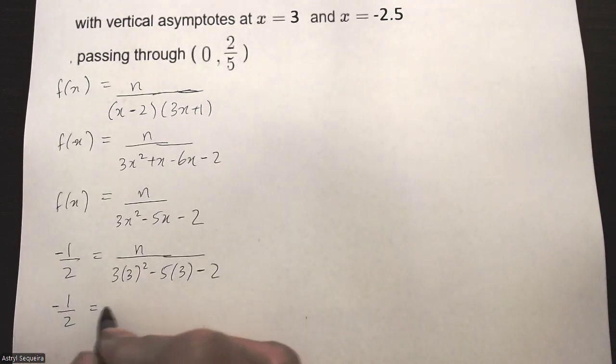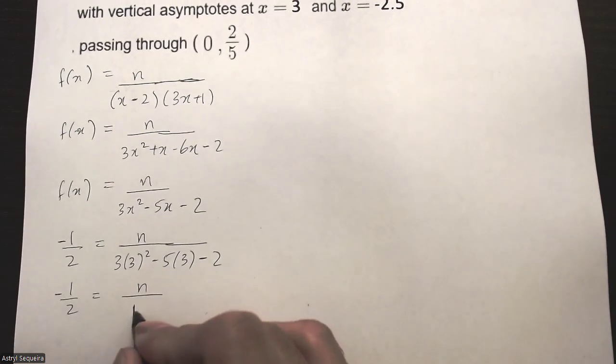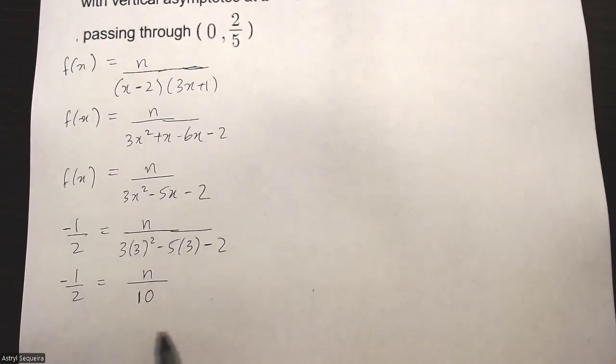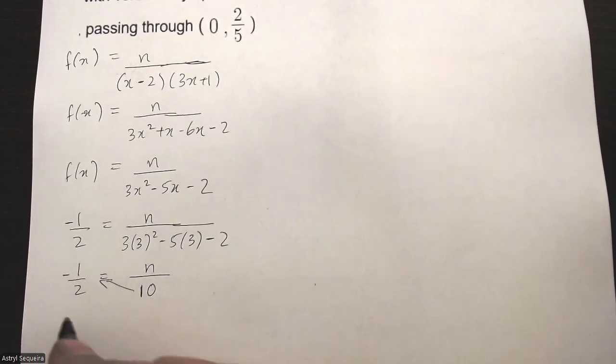I'll simplify the denominator next—I'll just do that in my calculator—and I just get 10. And I'll cross multiply this on the other side.